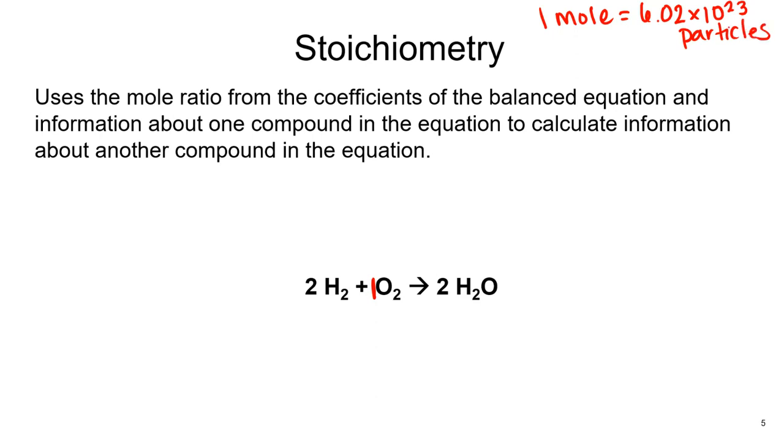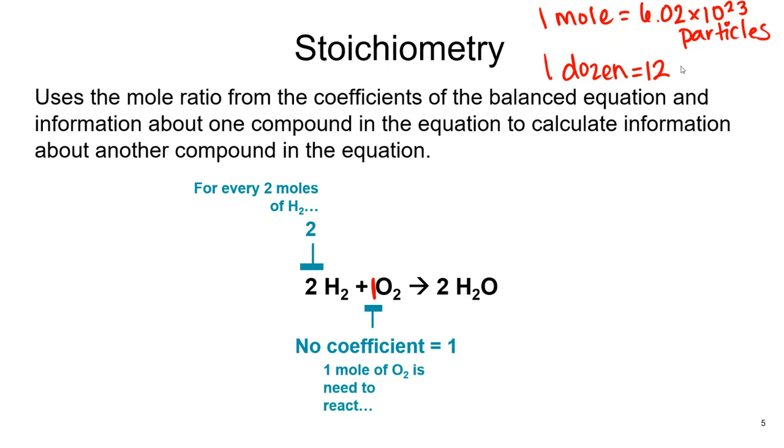So atoms or molecules just like a dozen means that you always have 12 of something. Talking about this reaction in terms of moles is going to just mean that we have 6.02 times 10 to the 23rd of that particular substance. So we can talk about the equation in terms of moles instead of molecules. And then the mole ratio would be two moles of hydrogen to every one mole of oxygen to produce two moles of water. And we can use those mole ratios to do calculations in the balanced equations.